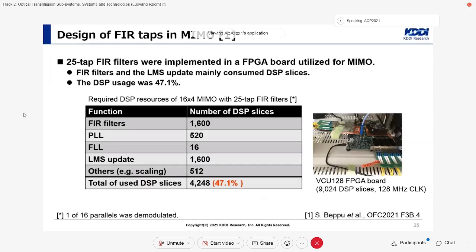In our design, 25 TAP FIR filters were implemented in a FPGA board utilized for MIMO. This table shows the DSP resources. The 25 TAP FIR filters and its LMS adaptive update mainly consumed DSP slices. The DSP usage includes PLL, FLL, and amplitude scaling was 47%.